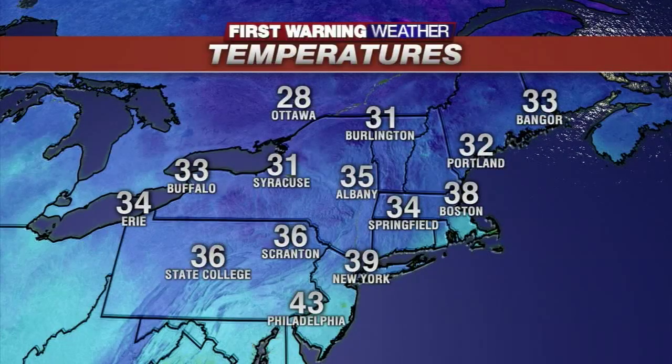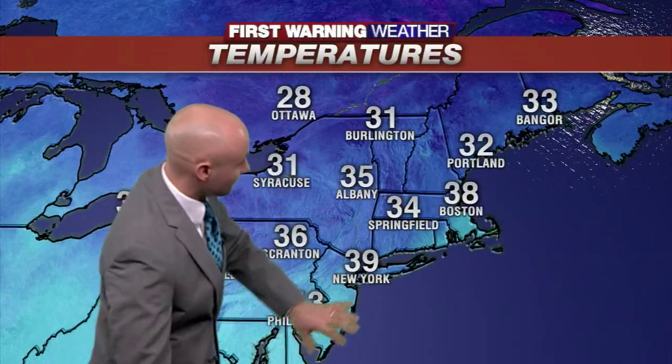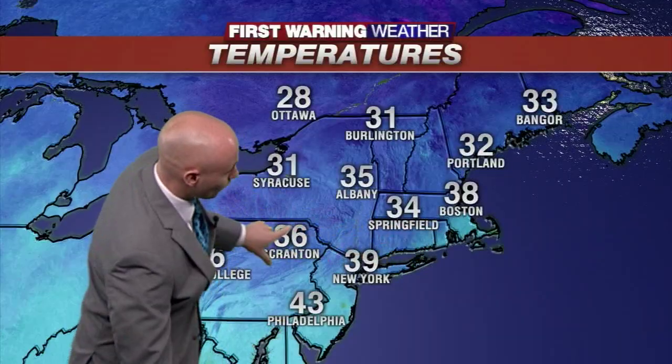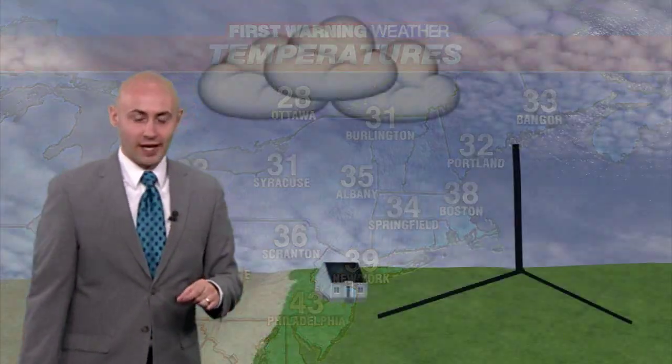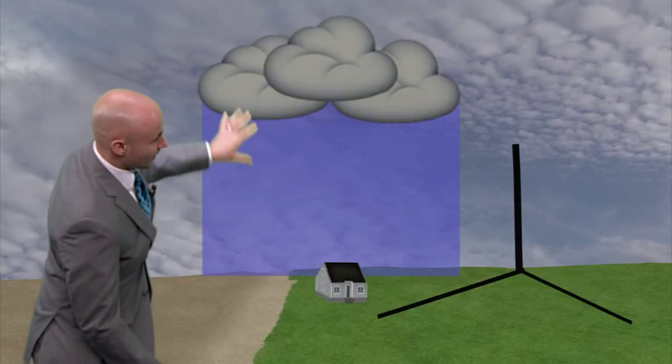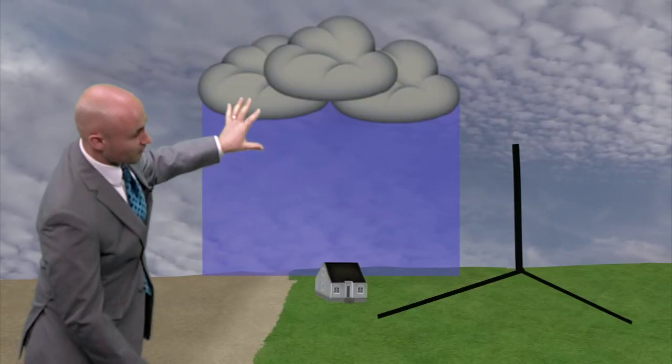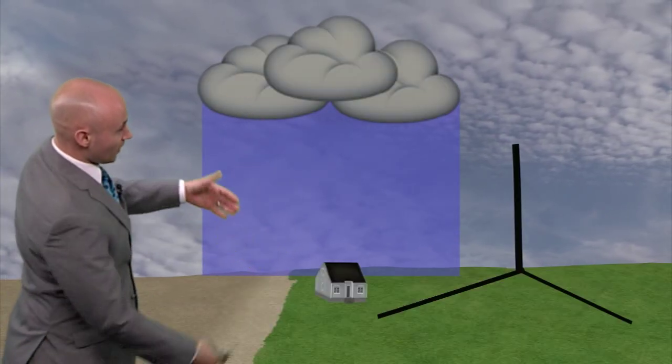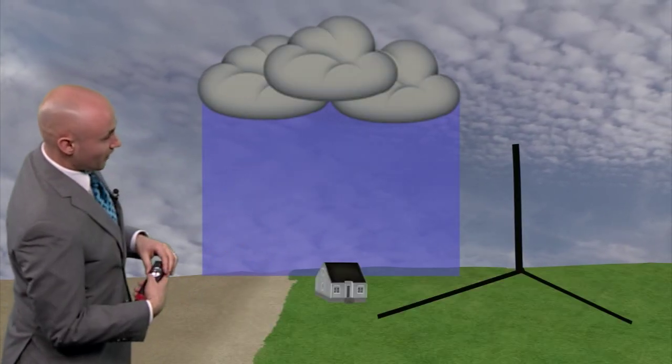Now this is a normal temperature map that we show every day. Temperatures right now in Springfield: 34 degrees — so it has north, south, east, and west. But we also have to forecast in three dimensions. We also have to forecast a column of air, and this blue column, for example, is a column of air all below 32 degrees.